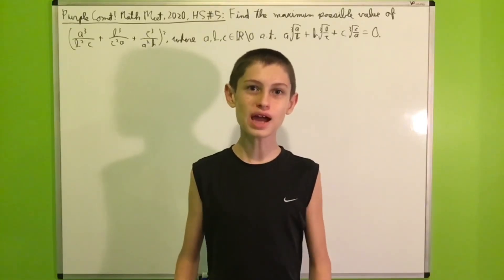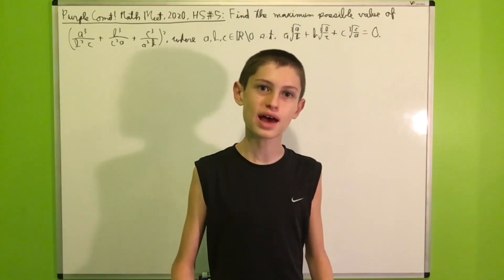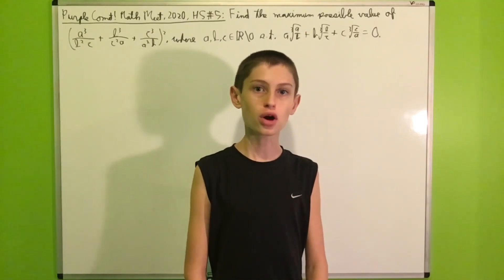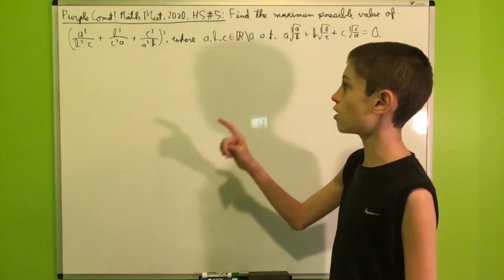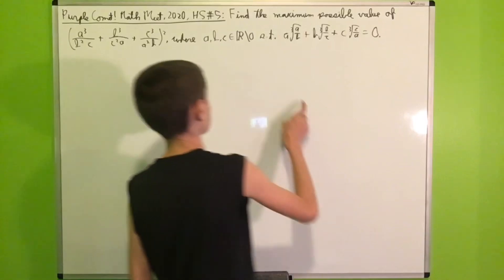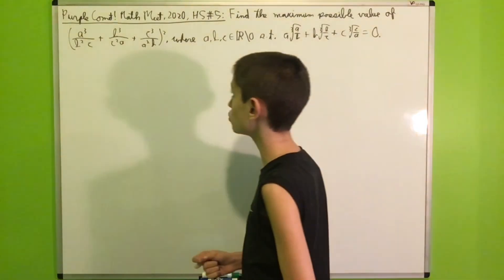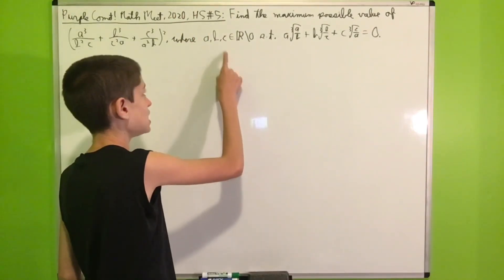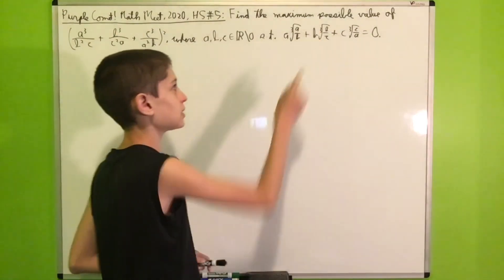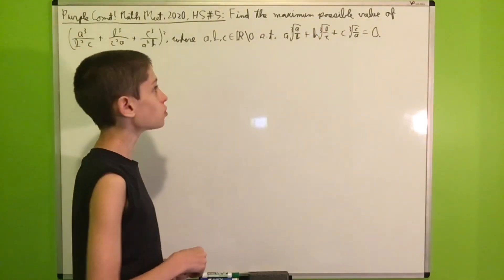Hi everyone. Originally today I was going to do an integral, but then I solved a problem from a math contest and I found it so amazing that I just had to make a video about it. It was problem 5 from the Purple Comet Math Meet of 2020, on the high school test. We want to find the maximum possible value of the expression a³/(b²c) + b³/(c²a) + c³/(a²b), whole thing squared, where a, b, c are nonzero real numbers satisfying a·∛(a/b) + b·∛(b/c) + c·∛(c/a) = 0.